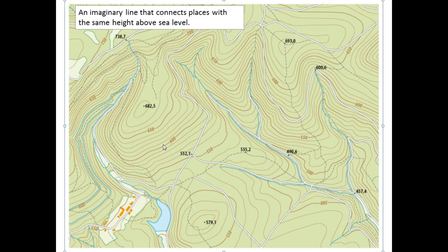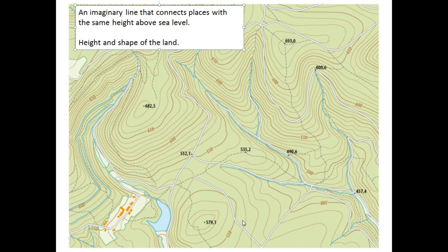Now we're going to move on to the function of a contour line. As we've seen in the definition, it shows us height above sea level, but it also shows us the shape of the land — and that's what we are going to learn today.